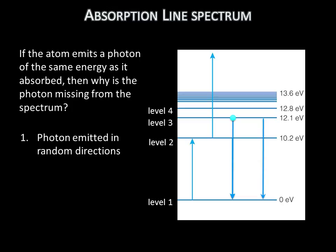First, the photons that are emitted get emitted in random directions, so most do not make it into the prism at all. Second, the electron may drop back down to its original level in multiple steps and therefore emits photons with different energies than the originally absorbed photon.